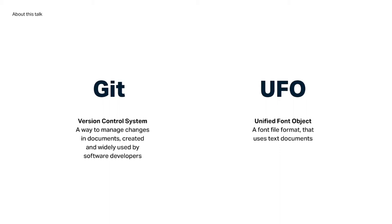A small introduction to the terms we'll be discussing: Git is a version control system — a way to manage changes in documents — created by and widely used by software developers. UFO stands for Unified Font Object, and it's a font file format.